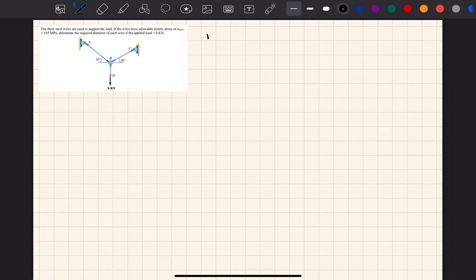In terms of givens, we are actually given a lot compared to statics problems. We are given that the allowable tensile stress in the wires, sigma allowable, is equal to 165 MPa. We're also given this force, and we're going to call this force BD.